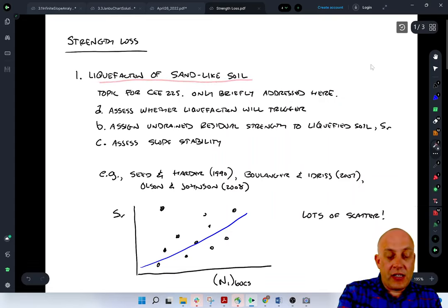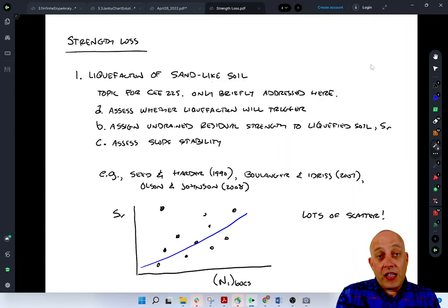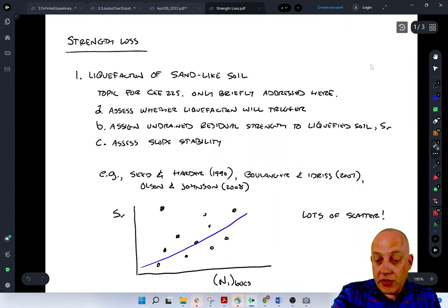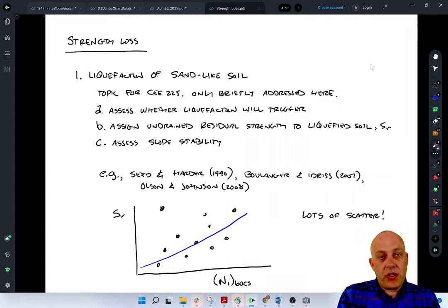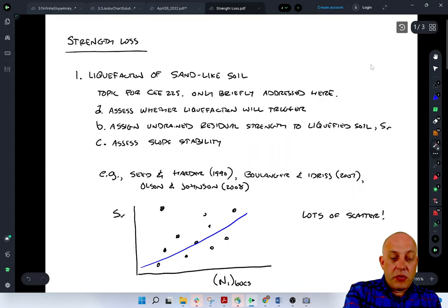First I'm going to talk about liquefaction of sand-like soil. When I talk about sand-like soil, I really mean a soil that is susceptible to liquefaction. This could be a non-plastic silt or a sand with some fines in it, but the fines don't have a lot of plasticity or obviously a clean sand, or even a gravel, potentially if there's impeded drainage and the gravel is not going to be free draining during earthquake shaking. So what we'll do first, assuming the soil is susceptible to liquefaction, is we'll do an assessment of whether liquefaction will trigger. And that's going to be a function of how dense is the soil and how strong is the shaking, and whether it plots above or below the liquefaction triggering curve.